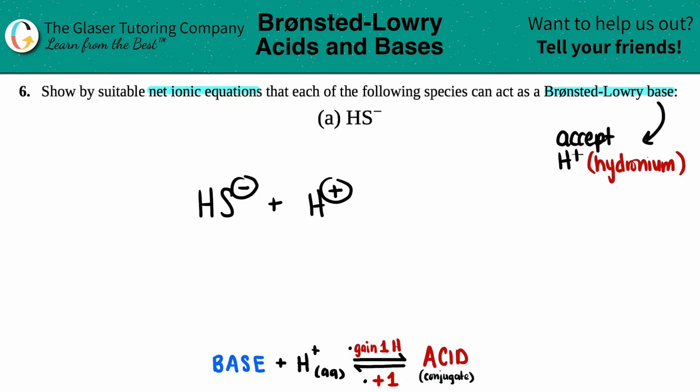Now, whenever you have ions, charged species in a net ionic equation, those are always going to be aqueous. And since we're dealing with acids and bases, they're going to be aqueous as well.